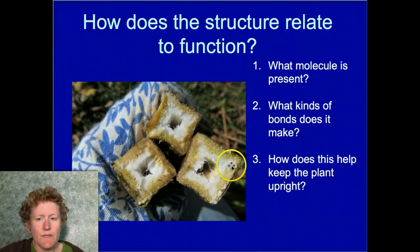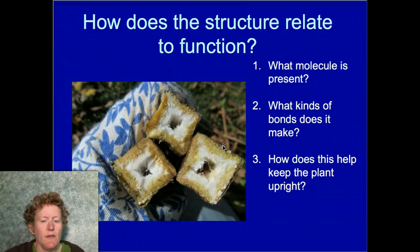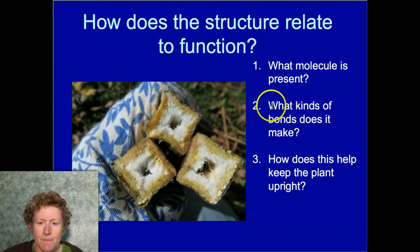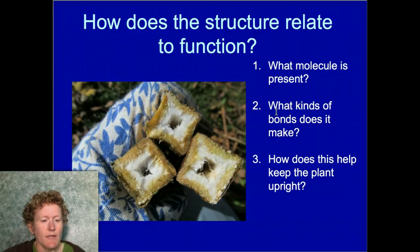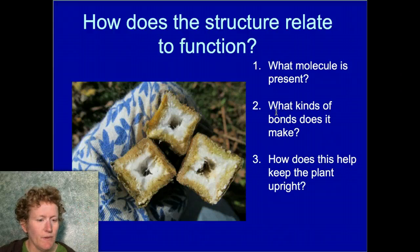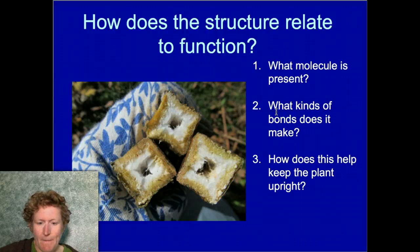The structure of the cellulose molecule is important for its function. It has covalent bonds, is a very long and rigid molecule, and that's important for what plants use it for — maintaining their shape.